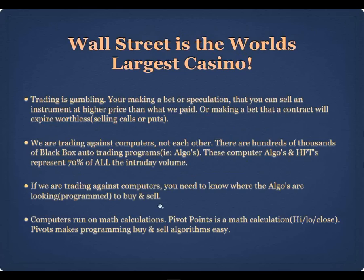Stock and commodity prices move from pivot point to pivot point. When trading options, only bet what you're willing to lose because Wall Street is the world's largest casino — it's legalized gambling. We're making a bet that we can buy or sell an instrument at a higher price than what we paid. We're trading against computers — hundreds of thousands of black box auto-trading programs, known as algos, represent 70% of all intraday volume.